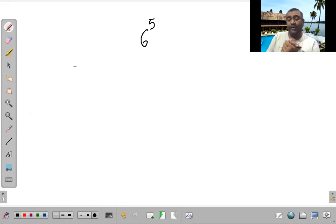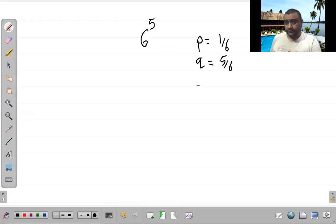And then if you ask me, what is the probability that 3 times success will get me? Success means dice on 6. So my probability is 1 by 6. Q obviously 5 by 6.